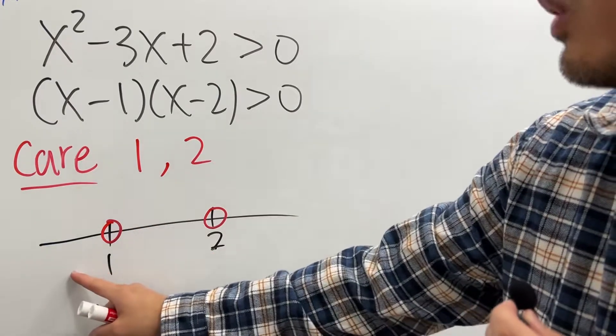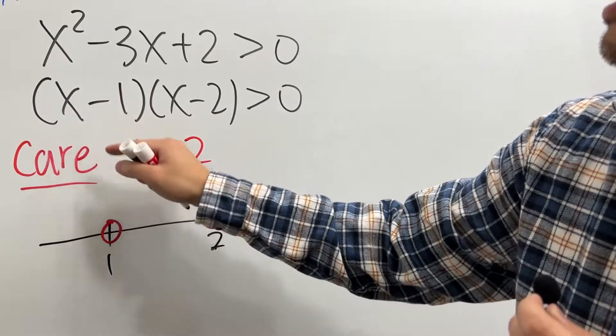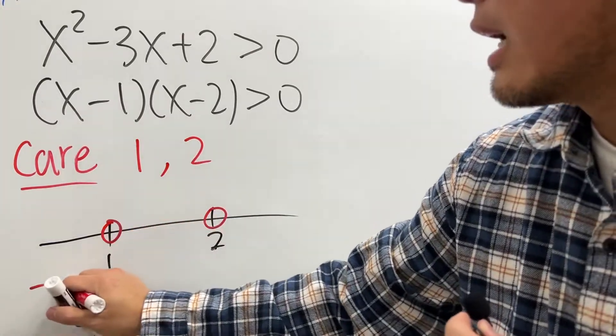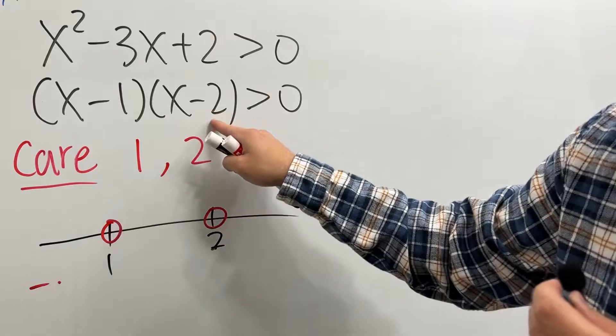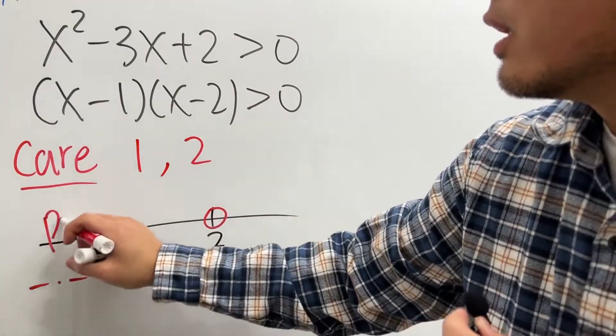Then, pick a number less than 1, let's say 0. Put it here, 0 minus 1 is negative, and then times 0 minus 2 is negative 2, right? So, negative times negative is positive. So, this right here gives us positive.